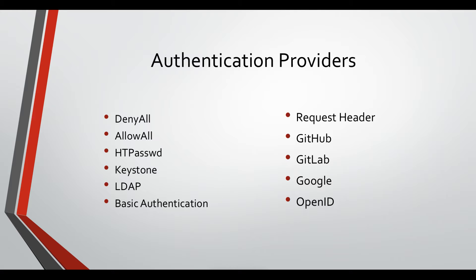And you have the request header authentication provider, where you authenticate users based on a specific header in their requests. This has to be combined with another provider which will actually add this header to user requests. You can also authenticate users based on their GitHub account, GitLab account, Google account, or OpenID. For all of the last four options you have to obtain the token and talk to the APIs related to these providers.